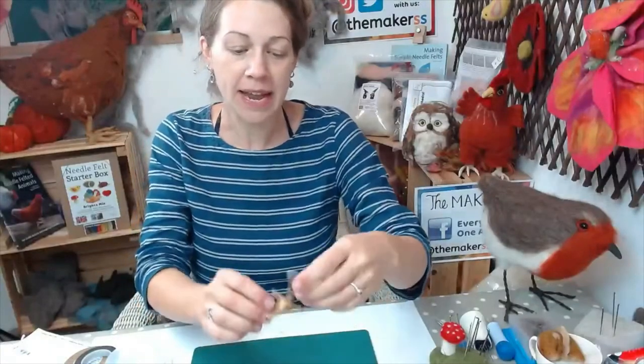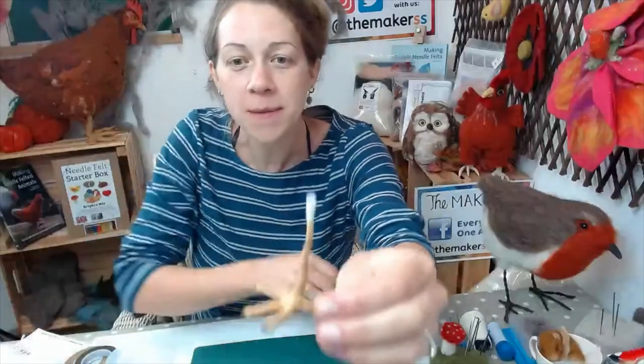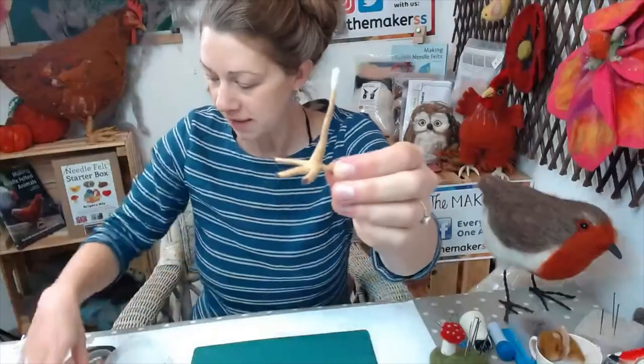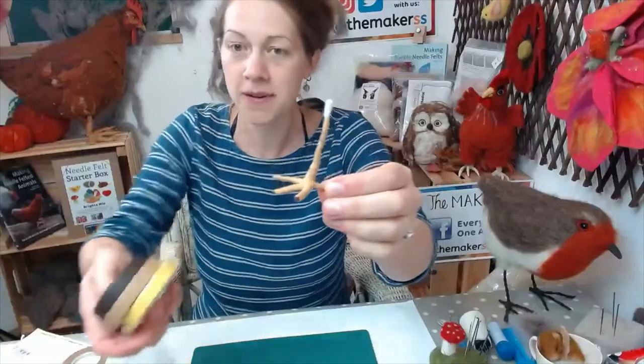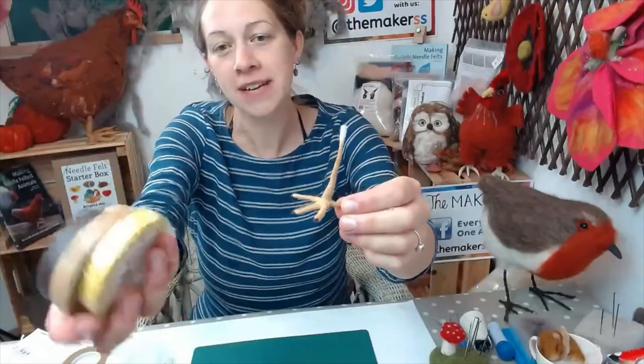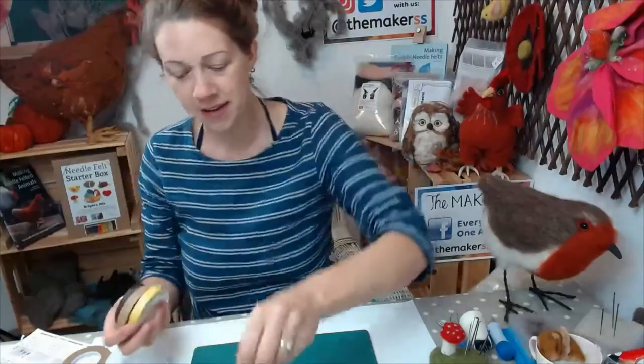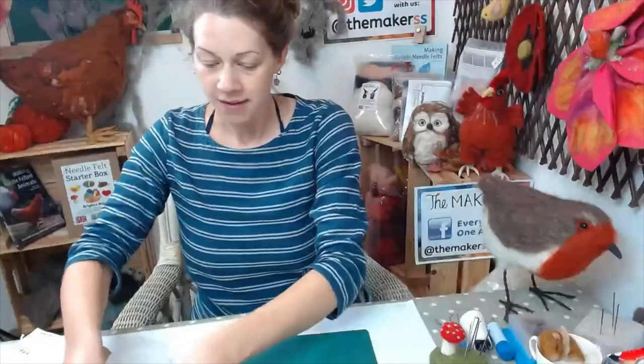So florist tape is another great way to wrap the legs to give it that kind of scaly effect. This one's wrapped with florist tape and we sell it in three different colours at the moment: beige, brown and yellow. So the yellow is great for ducks, but you can also colour it in if you want orange.